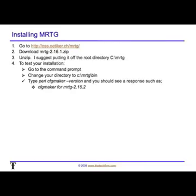MRTG is pretty straightforward as well. We go to the MRTG webpage at oss.oetiker.ch — it's basically a zip file. Download the zip file and create an MRTG directory off your root. Go to the command prompt, change directory to the bin subdirectory within MRTG, and type 'perl cfgmaker --version'. You should see the CFGMaker version displayed.